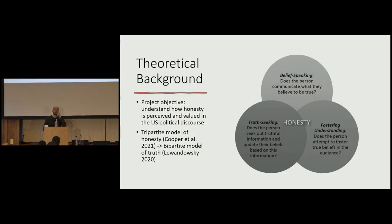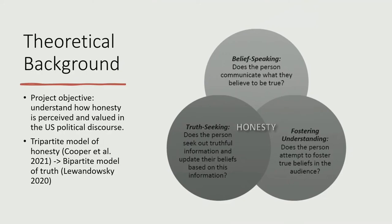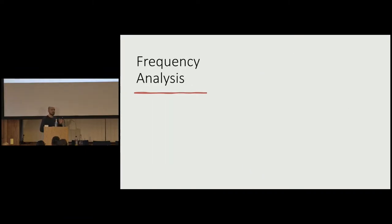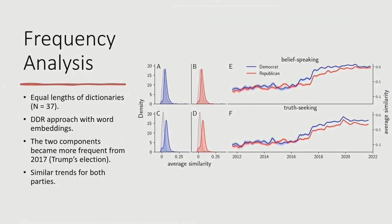Our hypothesis is that honesty seems to be a unified concept. A politician should be considered honest when they tell the truth — the truth-seeking dimension. But our idea is that honesty has fractured over time, giving birth to a belief-speaking dimension: someone can be considered honest, as in the case of populist figures, when they simply tell what's on their mind and defy the truth-seeking dimension itself. To observe the presence of these two dimensions in US political discourse — specifically in tweets — we developed two keyword lists, one for each dimension, refined through survey, and used word embeddings to measure similarity with tweets. In 2016, both dimensions increased their presence in the analyzed tweets, regardless of party.